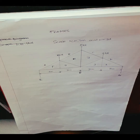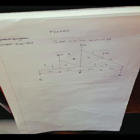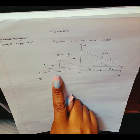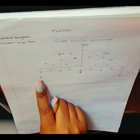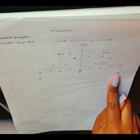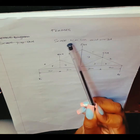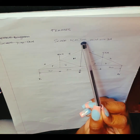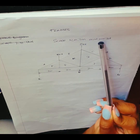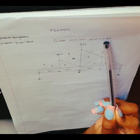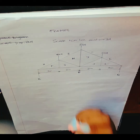Firstly, we are going to calculate the left-hand reaction and the right-hand reaction. Looking at this frame, we have our left-hand reaction here and our right-hand reaction here. The scale is 1 centimeter to 1 meter, and 1 centimeter to 1 kilonewton. So let's calculate the reactions.